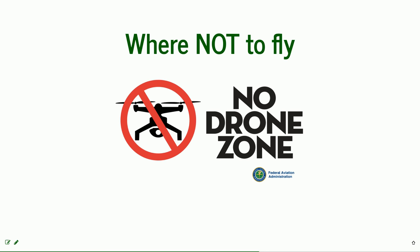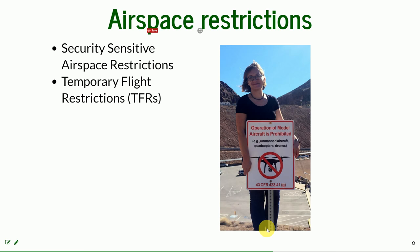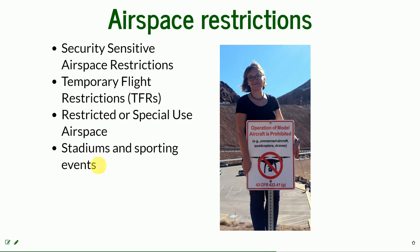We are moving now to a very important part of the lecture: where are the places you are not allowed to fly with your drone — the so-called no-drone zones — how they are divided, and where to find information about them. There are multiple airspace restrictions: some are security-sensitive airspace restrictions, some are temporary flight restrictions, and some are restricted or special-use airspace. Stadiums and sporting events have different restrictions, and there are also special rules for areas with wildfires and around airports.